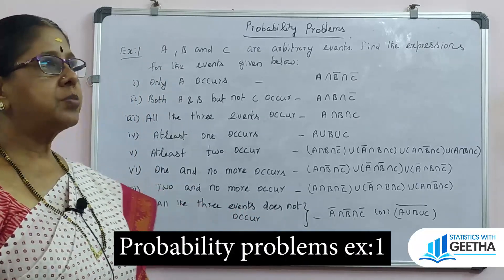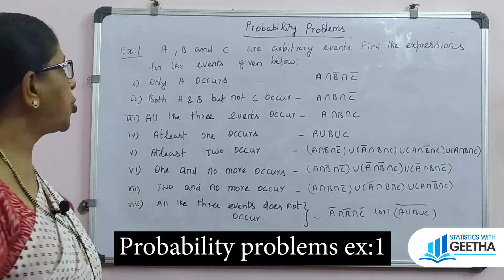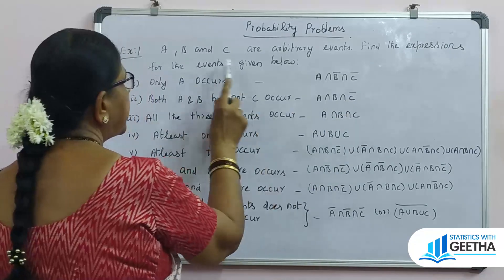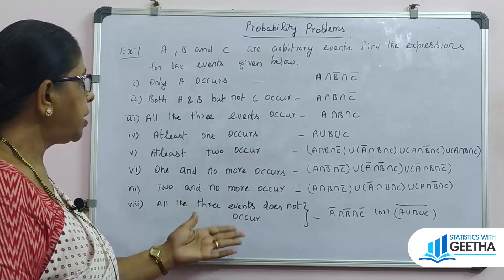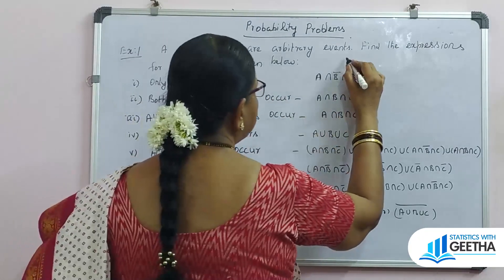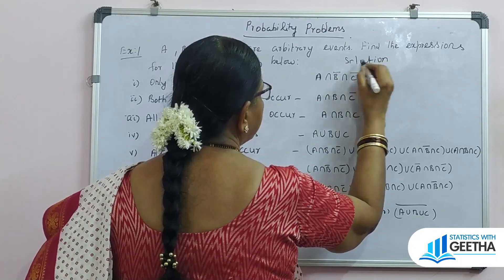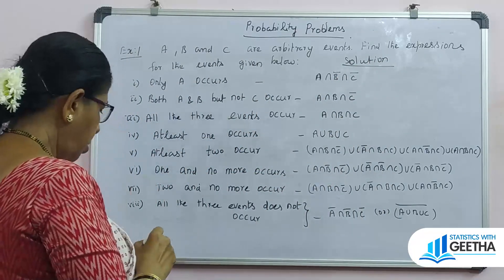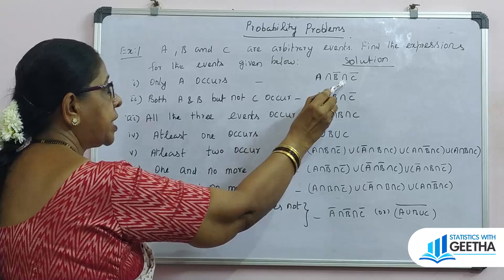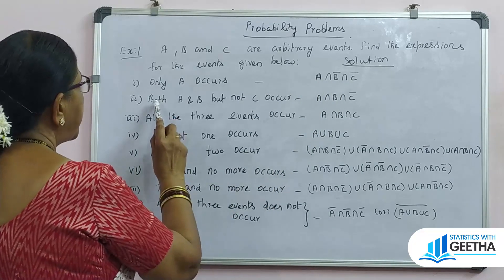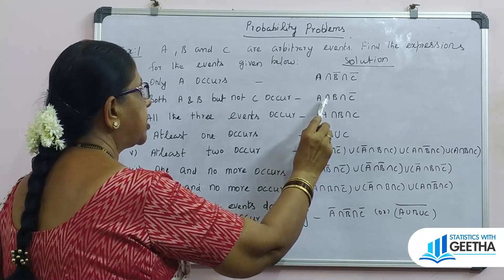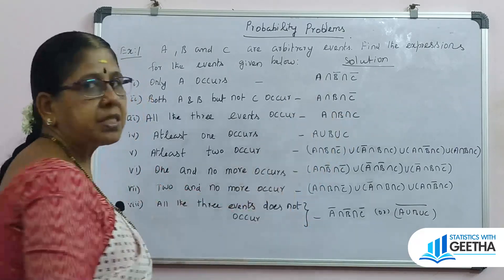Now probability expressions problem: A, B, and C are arbitrary events. Find the expressions for the events listed below. Only A occurs: A intersection B complement intersection C complement. Both A and B occur but not C: A intersection B intersection C complement. All three events occur: A intersection B intersection C.